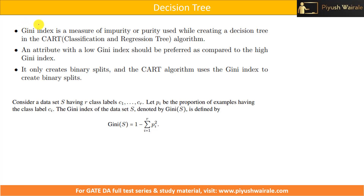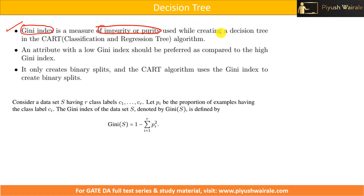In this video we are going to discuss the Gini Index. It's a small but important topic from the gate exam point of view. You can expect one conceptual question or one short numerical question based on this topic. So first, what is the Gini Index? The Gini Index is a measure of impurity or purity used while creating a decision tree.